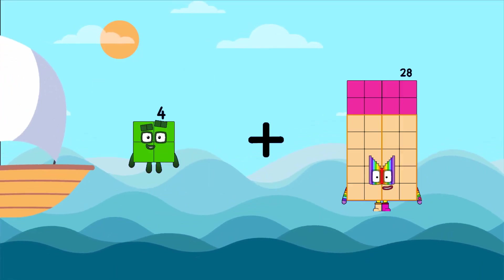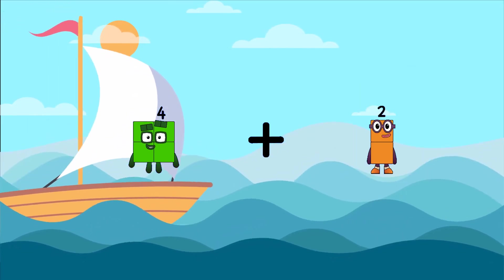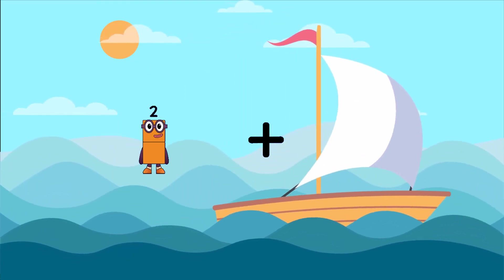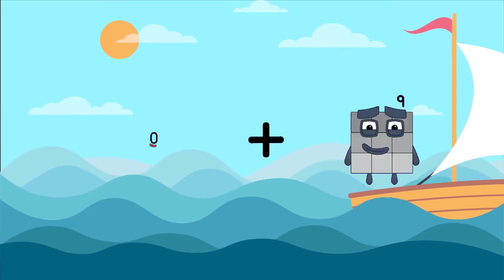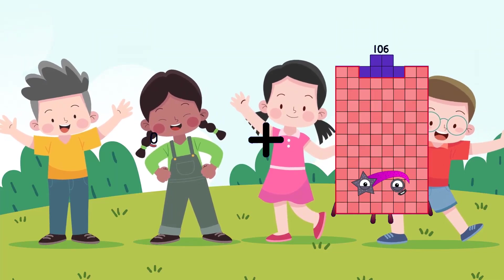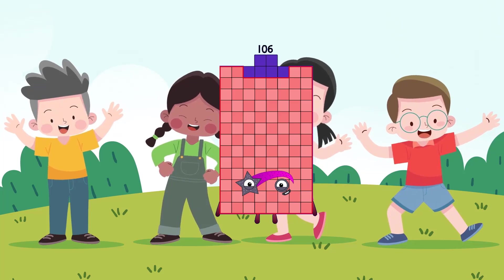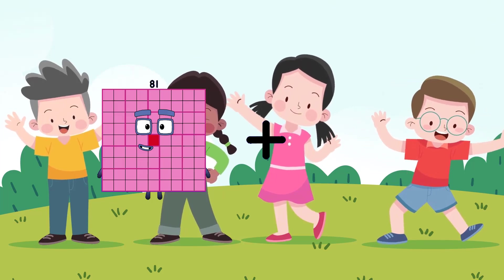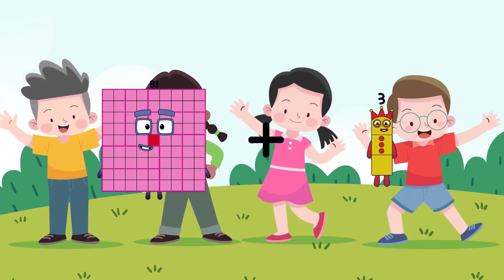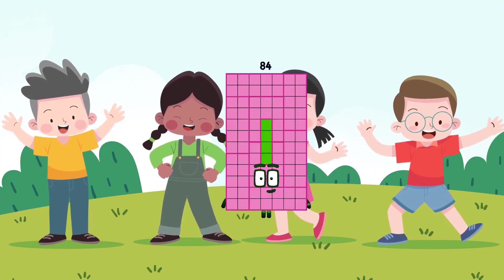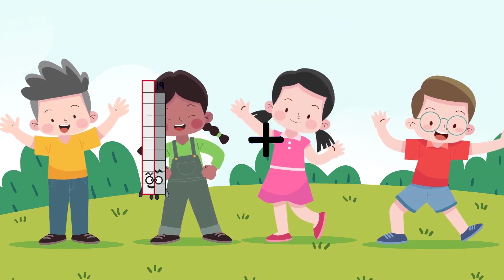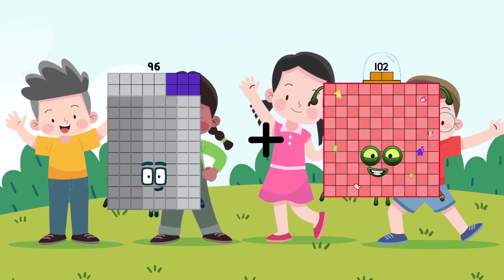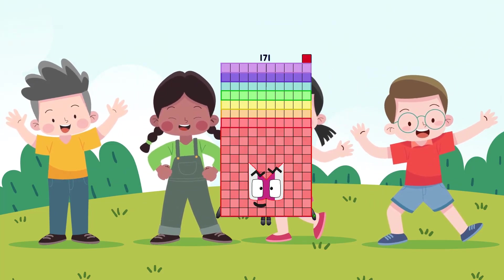4 plus 2 equals 6. 0 plus 106 equals 106. 81 plus 3 equals 84. 96 plus 75 equals 171.